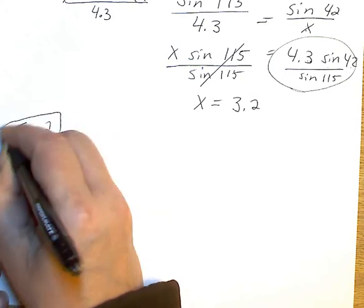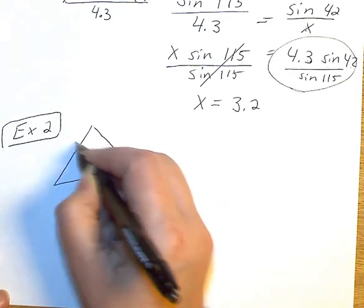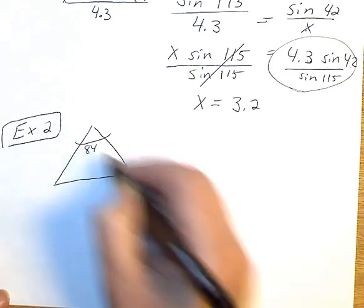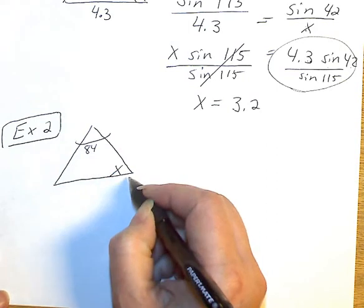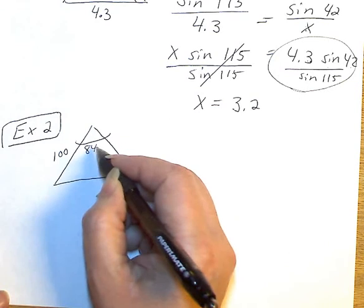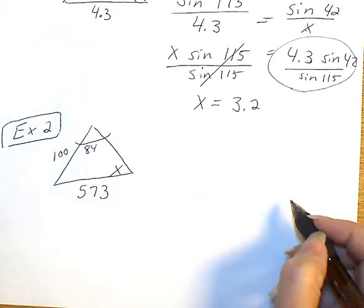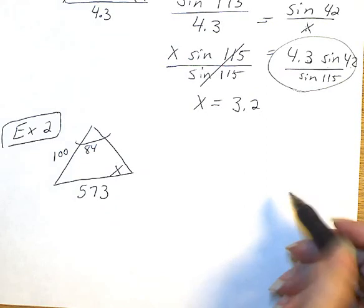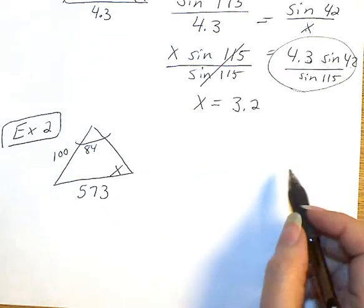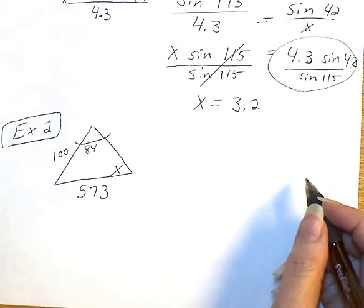Example two. We have our triangle. And the top angle is 84. We don't know this bottom left. Across from X is 100. Across from 84 is 573. So I want you to think about how would you set this up. So take a moment and try to set it up, or pause the tape and try to set it up.